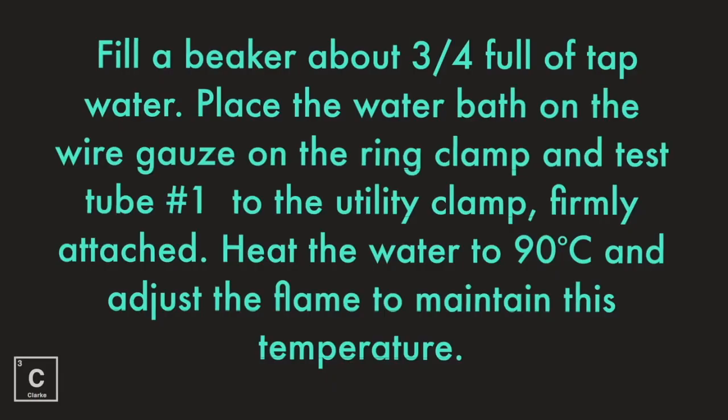Fill a beaker about three-fourths full of tap water. Place the water bath on the wire gauze on the ring clamp and attach test tube number one to the utility clamp, firmly attached. Heat the water to 90 degrees Celsius and then adjust the flame to maintain this temperature. Let me show you what that looks like.